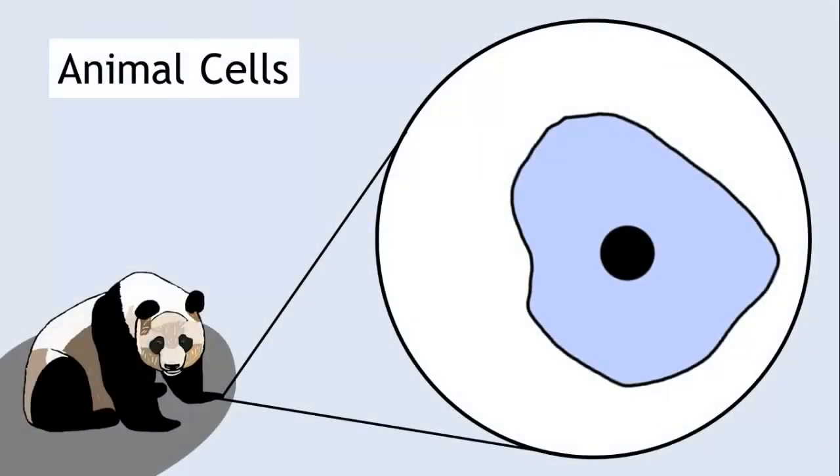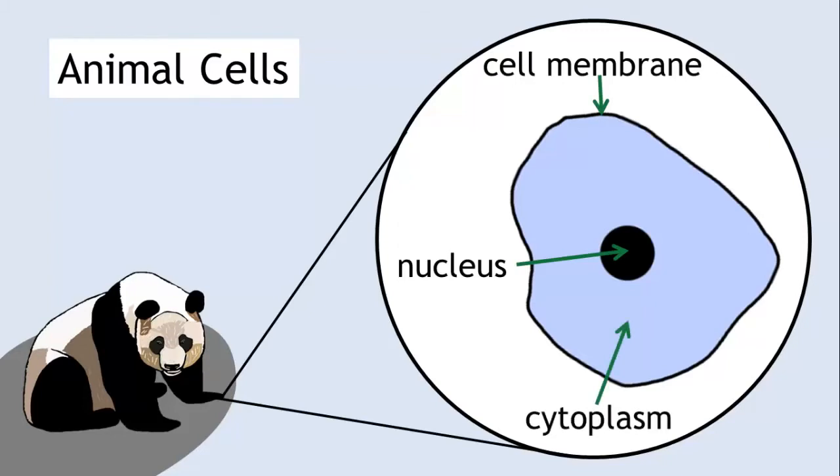Animal cells. A typical animal cell will include the nucleus, a cell membrane, and a cell cytoplasm.